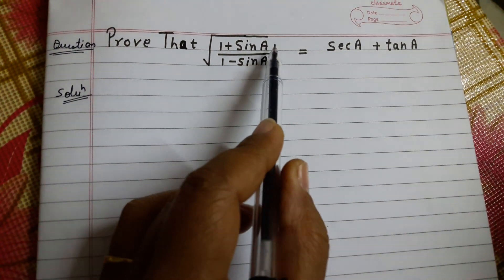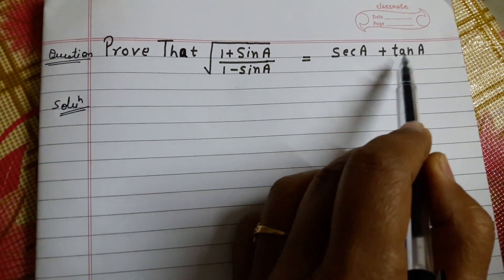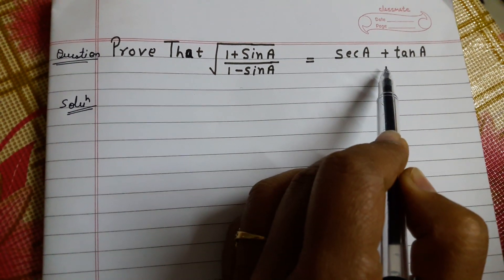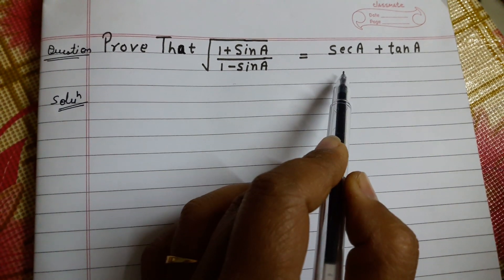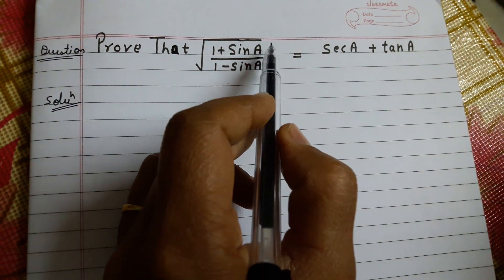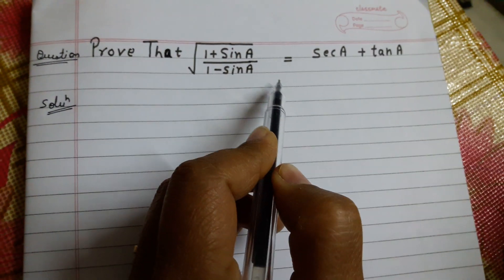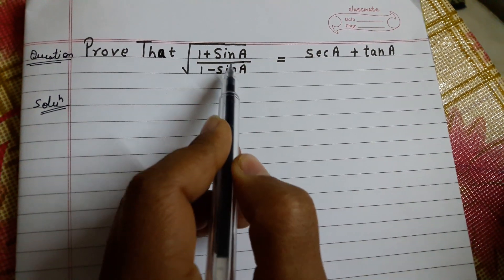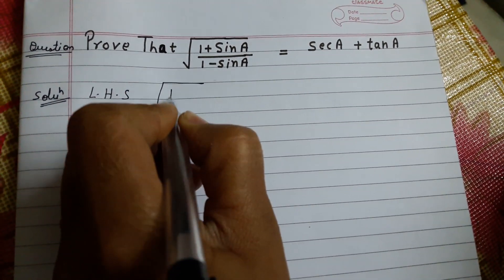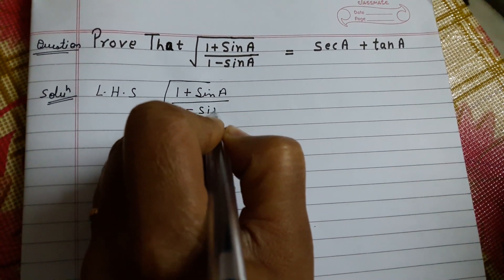Today's question is: prove that √((1 + sinA) / (1 - sinA)) = secA + tanA. In this question, we have to prove that the left hand side and right hand side are equal. We can prove from either side, but we will work on the left hand side equation, which is √((1 + sinA) / (1 - sinA)).